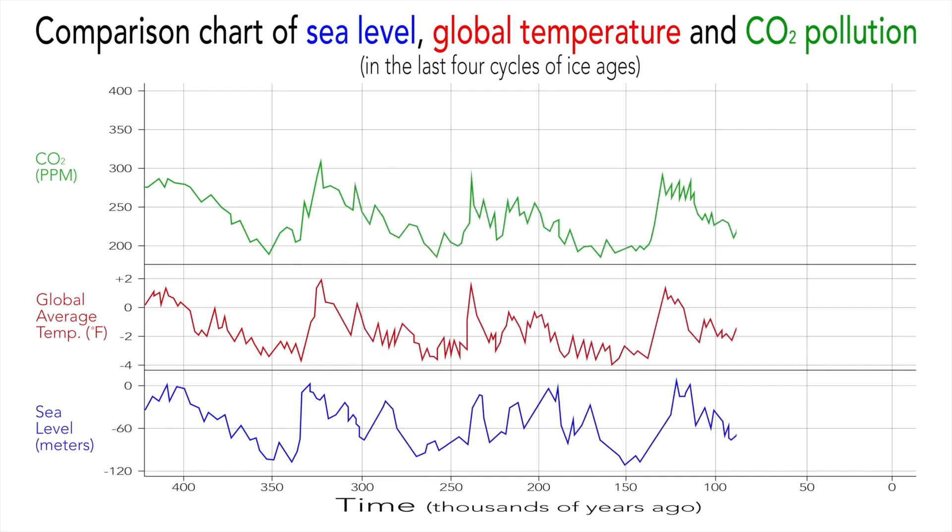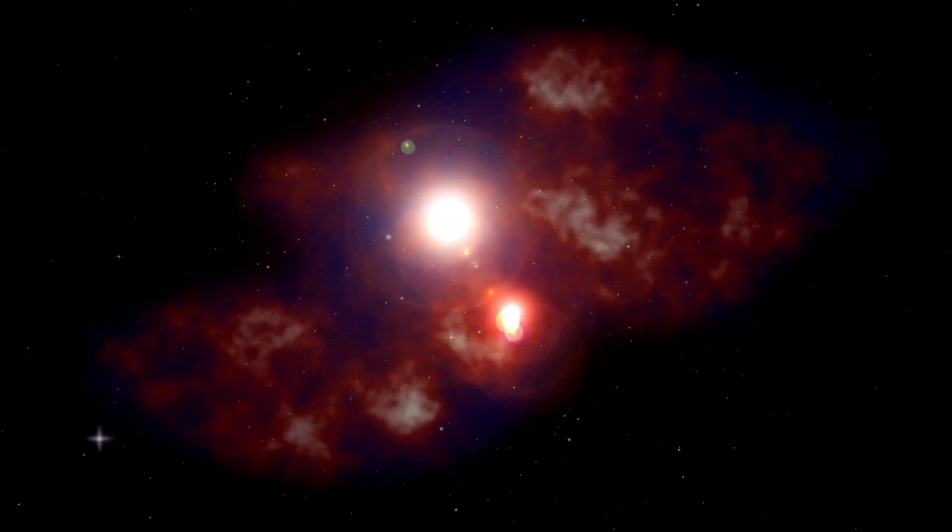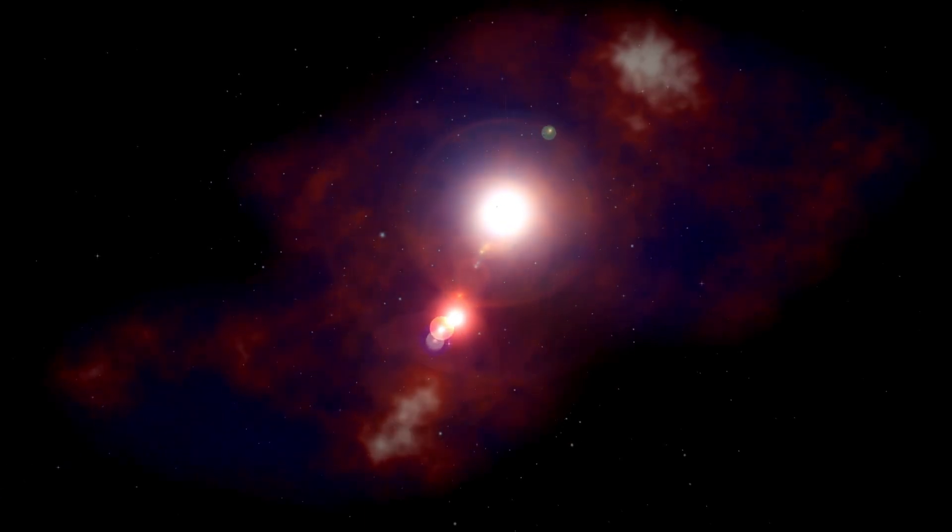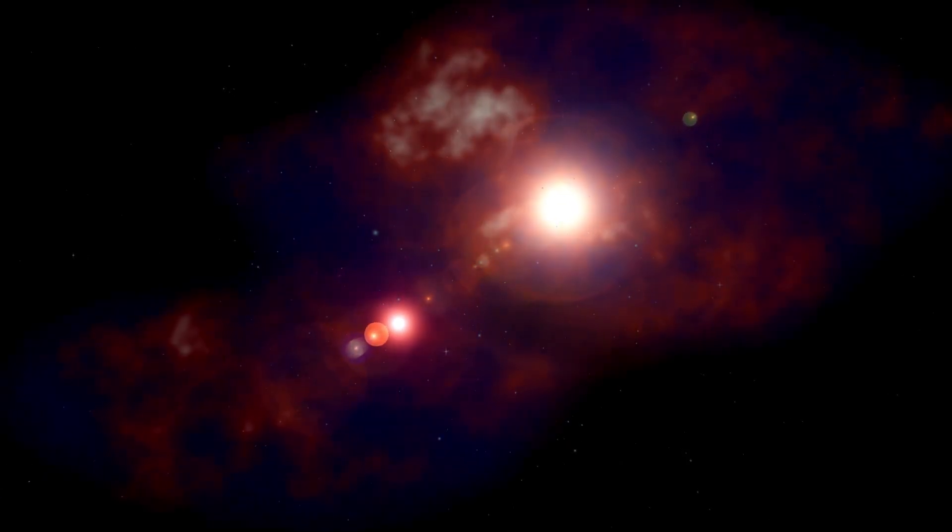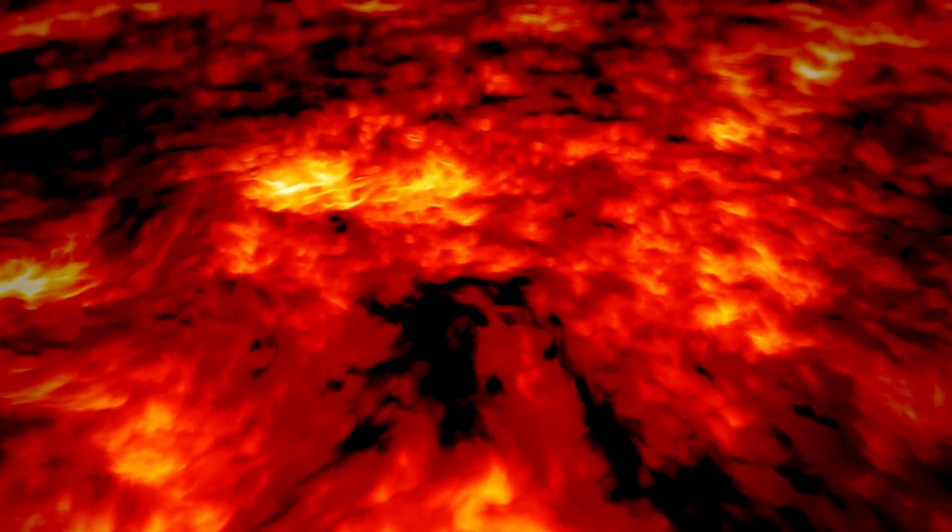The unique thing about Betelgeuse is that we can actually see its surface, which isn't the case for most other stars. This gives us an incredible opportunity to learn about how big stars like Betelgeuse behave as they get older, including these kinds of surprising mass ejection events.